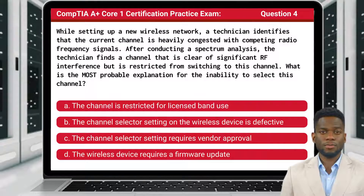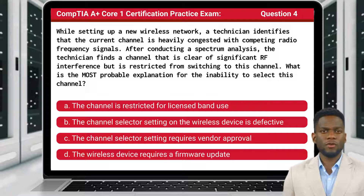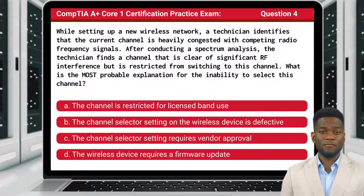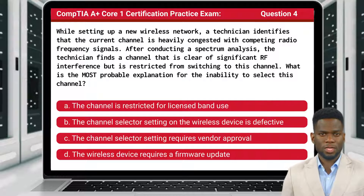Question 4. While setting up a new wireless network, a technician identifies that the current channel is heavily congested with competing radio frequency signals. After conducting a spectrum analysis, the technician finds a channel that is clear of significant RF interference, but is restricted from switching to this channel. What is the most probable explanation for the inability to select this channel?